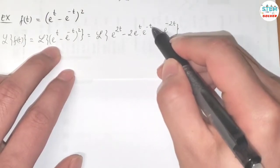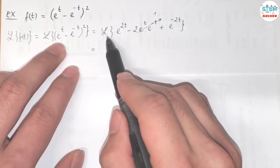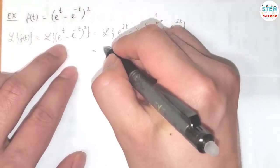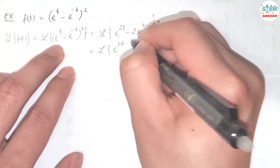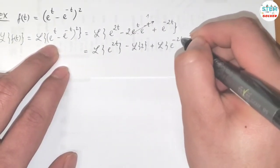So e to the t times e to the negative t which is 1. Now I'm going to apply the L to every single term inside here. So I have L of e to the 2t minus L of 2 plus L of e to the negative 2t.